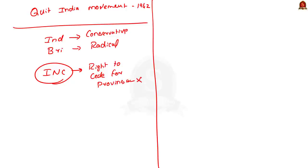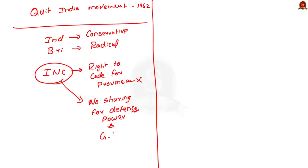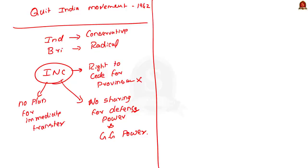The INC also opposed the mission because there was no provision for sharing defense-related powers with Indians. The proposal also mentioned that the Governor General would continue to have full powers, whereas the INC just wanted the Governor General to act as a constitutional head. Finally, the INC opposed the proposal because it lacked a concrete plan for the immediate transfer of power.